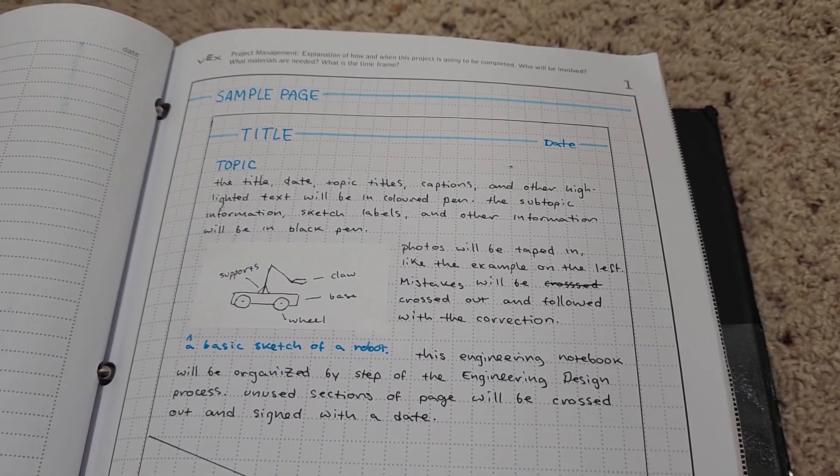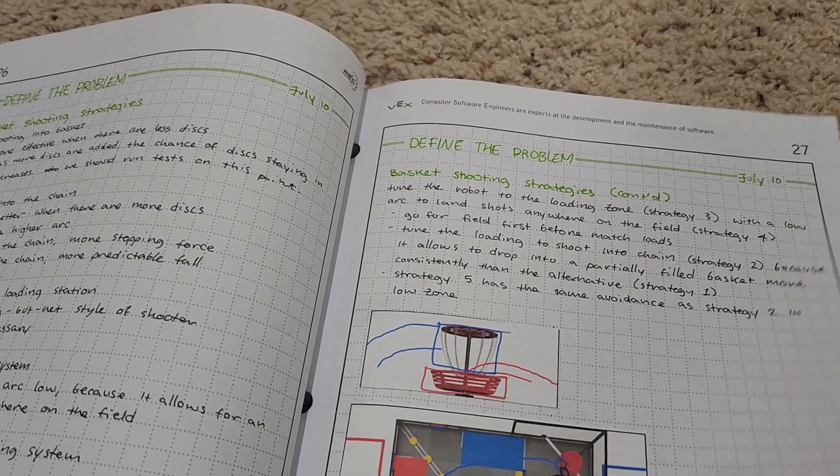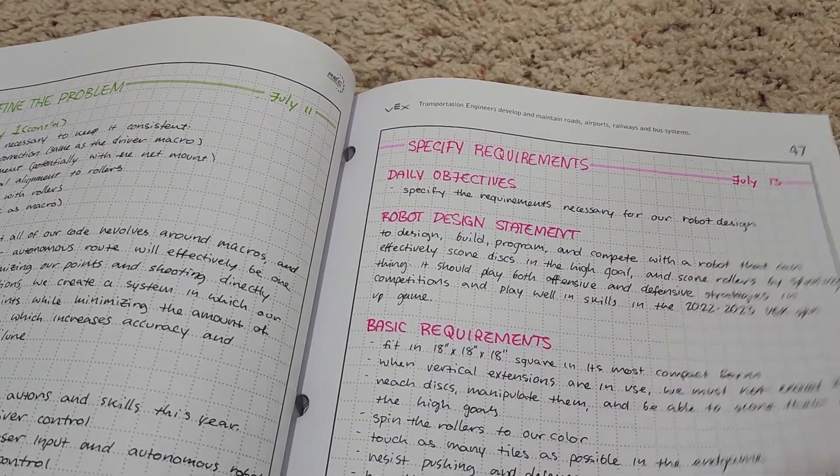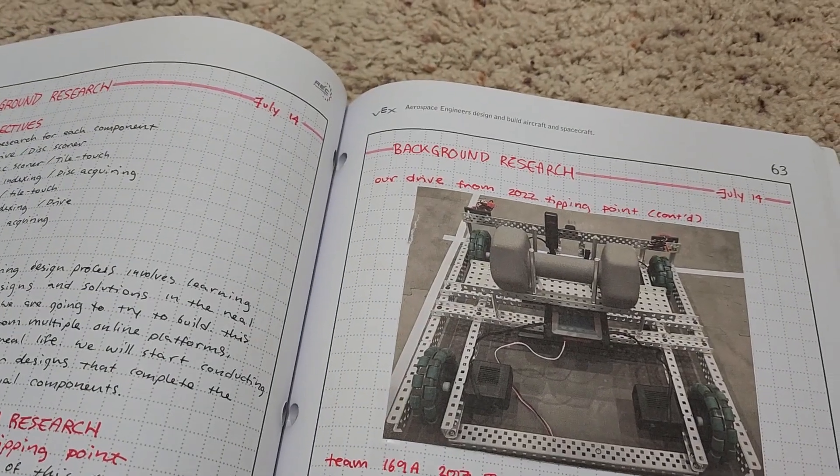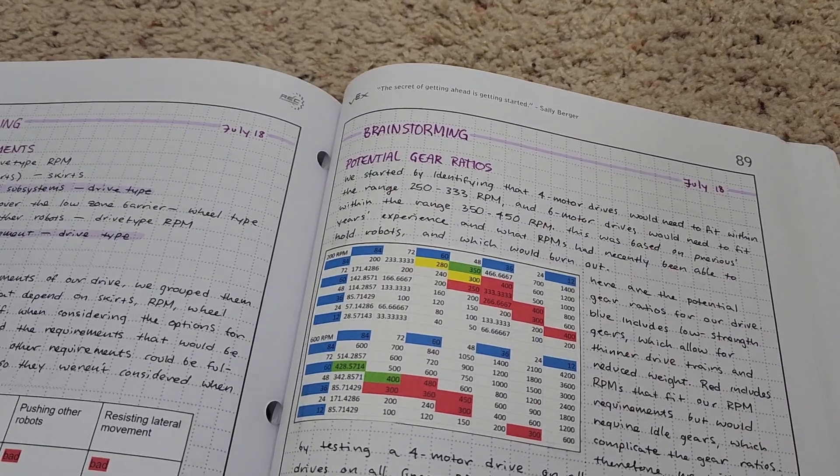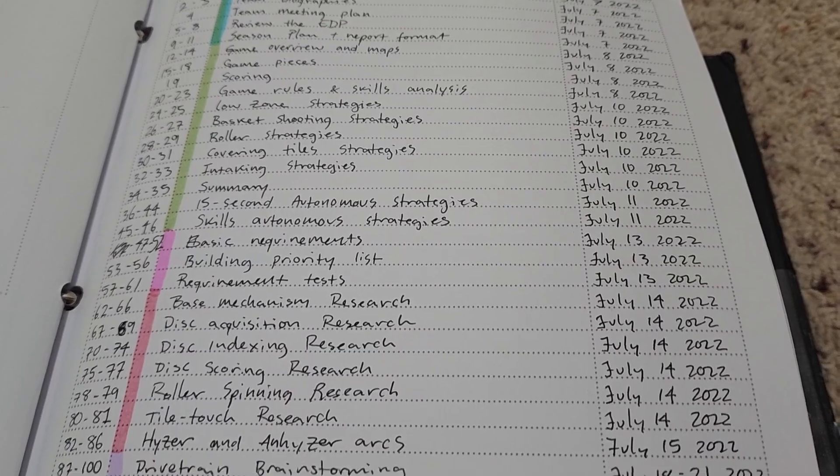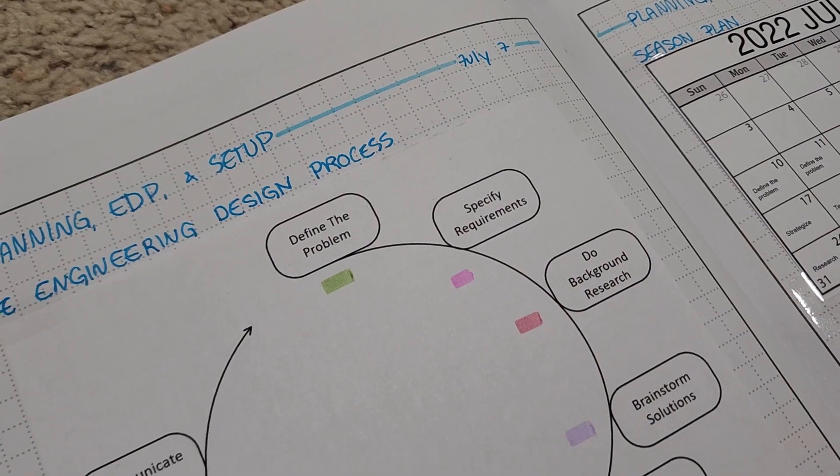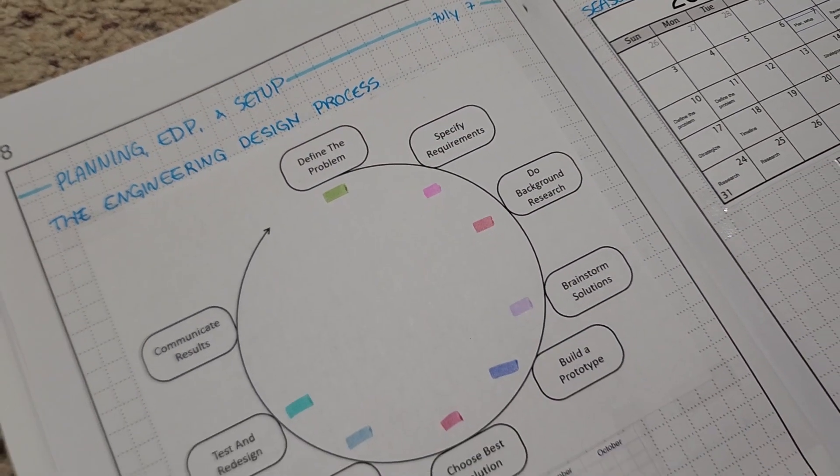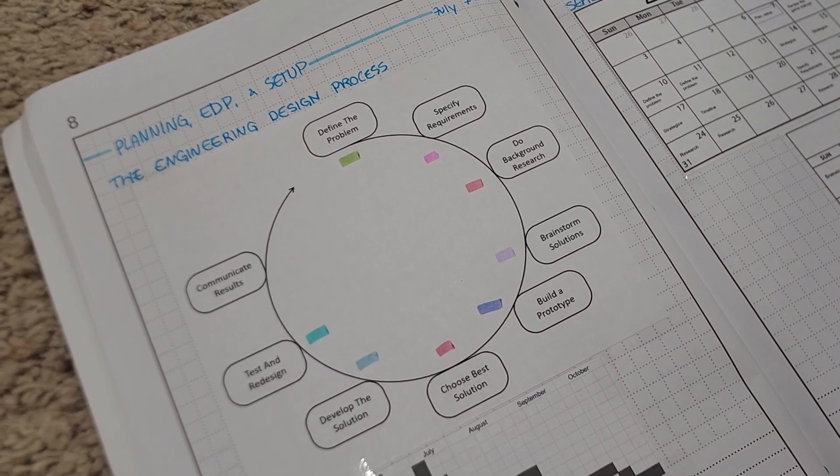The sample page is where I identify the format that I'm going to be using, so that when the judges read the notebook, they can see the way that I'm going to be organizing it, and they can easily access all the information they want to see. I color-coded everything, as seen on the contest page, by the steps of the engineering design process, since that's what's the most important thing as per the design rubric. And it was super easy to classify all the different projects that my team did in this way.